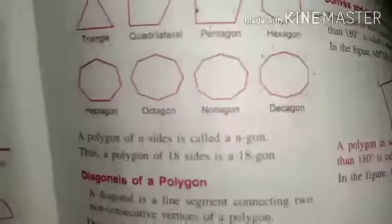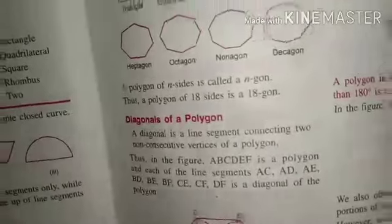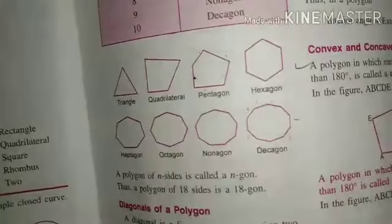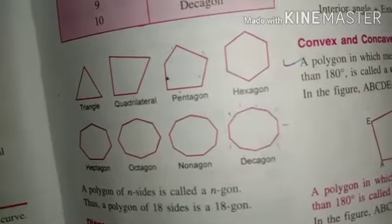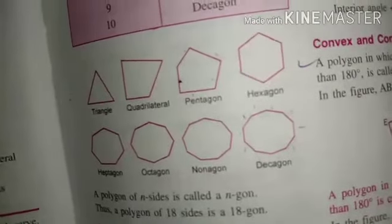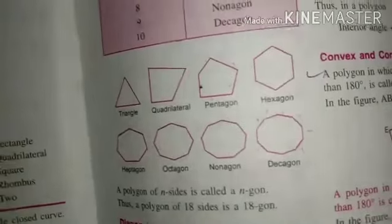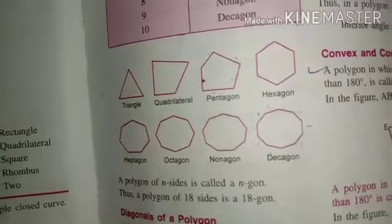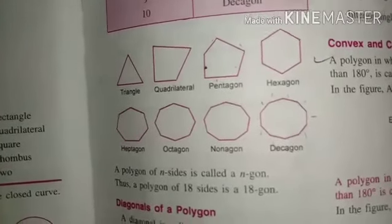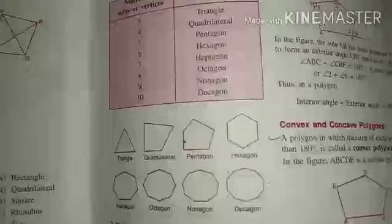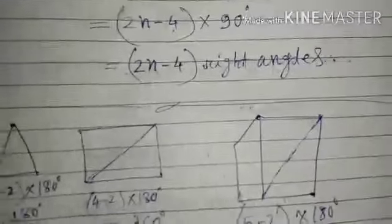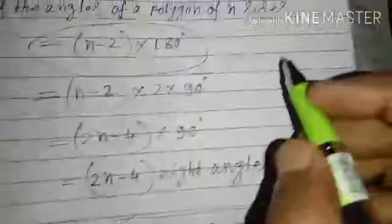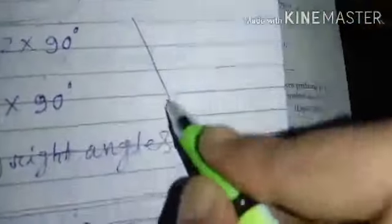One question you will get in this chapter is: how many diagonals can be drawn in a figure? For example, how many diagonals can be drawn in a pentagon, a hexagon, or a heptagon? For this purpose, there is a formula. With the help of this formula you can easily find out the number of diagonals in a polygon.